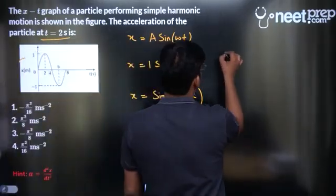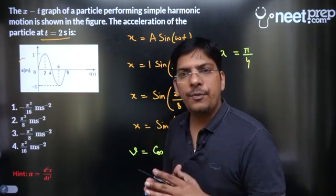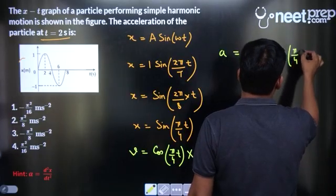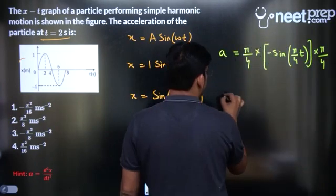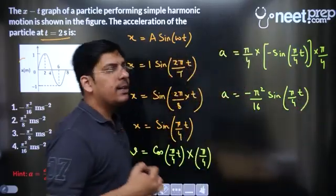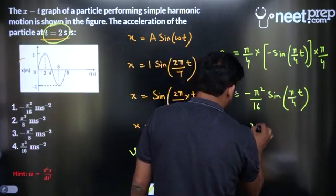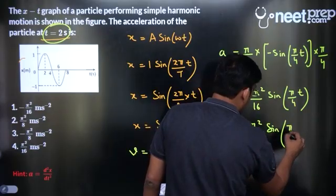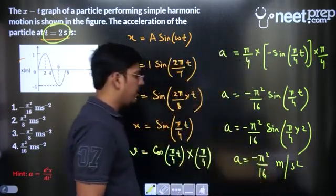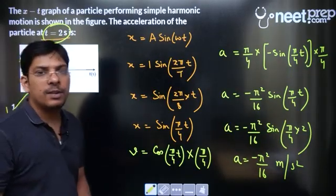Differentiating velocity again, acceleration = −sin(π/4 · t) × (π/4)² = −(π²/16)·sin(π/4 · t). At t = 2 s: acceleration = −(π²/16)·sin(π/4 × 2) = −(π²/16)·sin(π/2) = −(π²/16) × 1 = −π²/16 m/s². Option 1, −π²/16 m/s², is the correct answer.